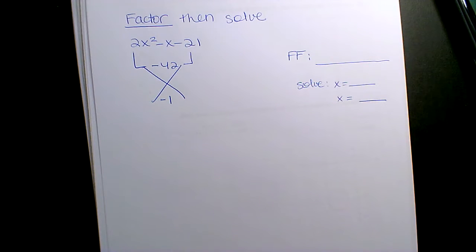So what were the two numbers that you found that made the product negative 42 but the summation negative 1? Negative 7 and 6. Yes, okay.